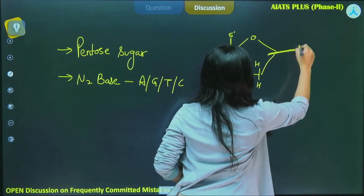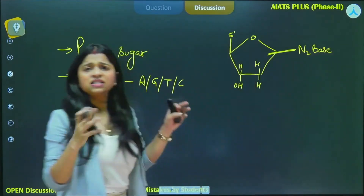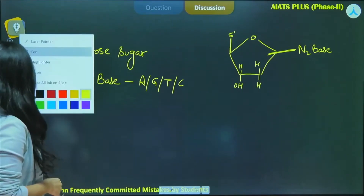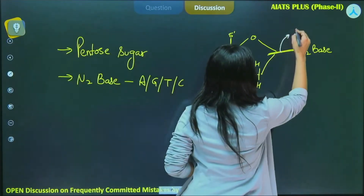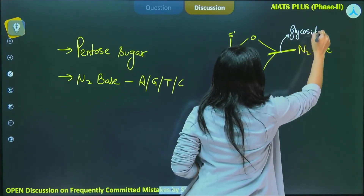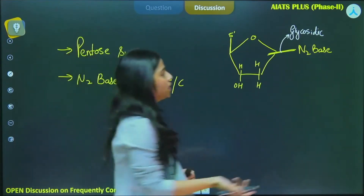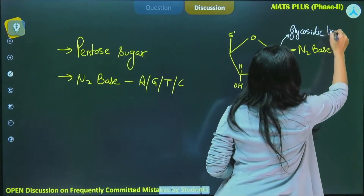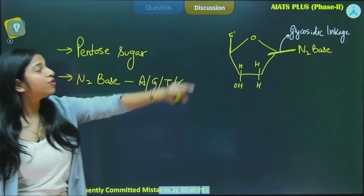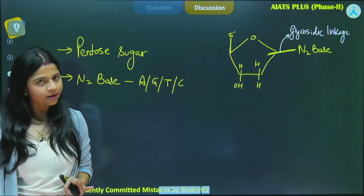The nitrogenous base will not simply attach on its own — it has to form a bond. That bond is called the N-glycosidic bond, also called the N-glycosidic linkage. The N-glycosidic linkage facilitates the attachment of the nitrogenous base to the first carbon of the pentose sugar.